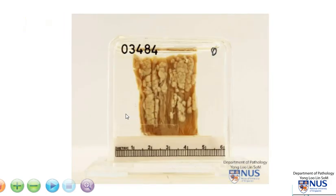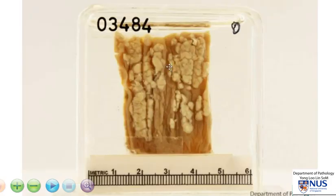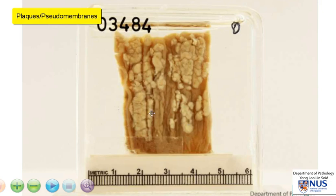The main pathology is seen in the mucosa and it is evidenced by these pale yellowish irregular plaques or pseudomembranes on the surface of the mucosa. This is a classical appearance of esophageal candidiasis.